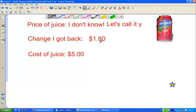$1.80 has to add up with something else to get me $5. So if I do $1.80 plus whatever the cost of my juice is, we'll call it Y, it equals $5, right?